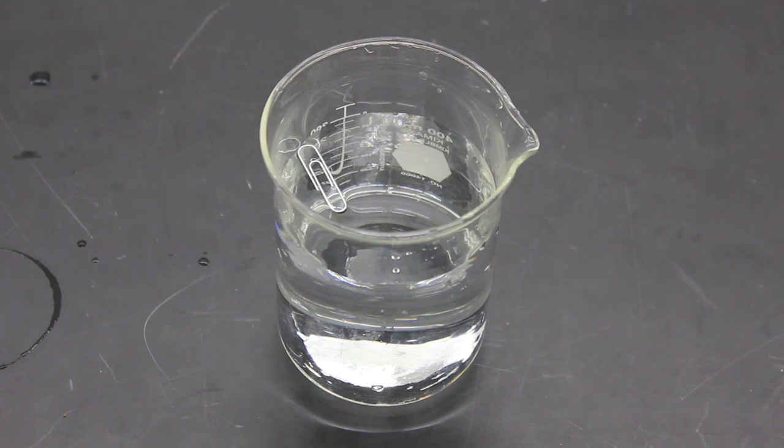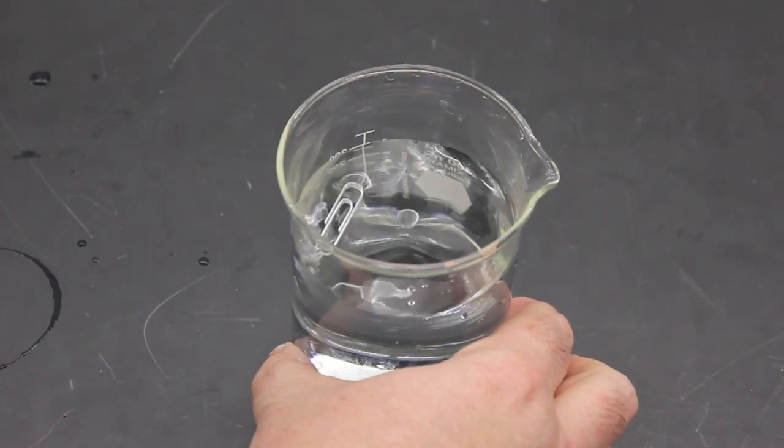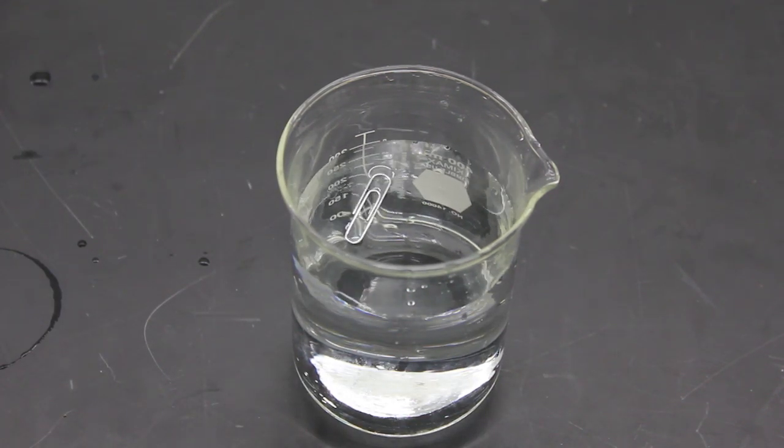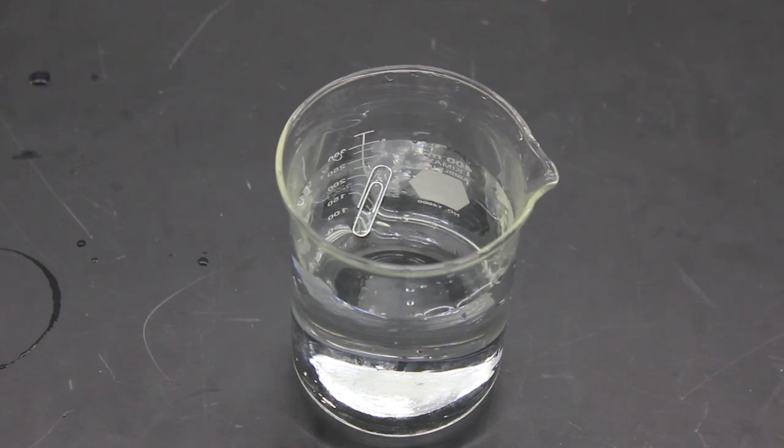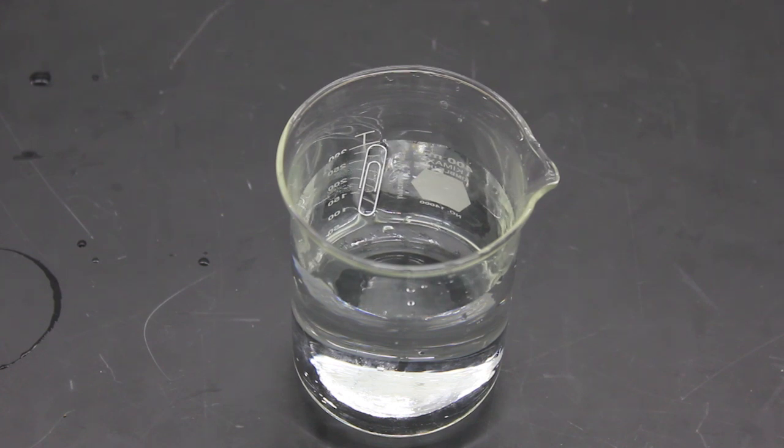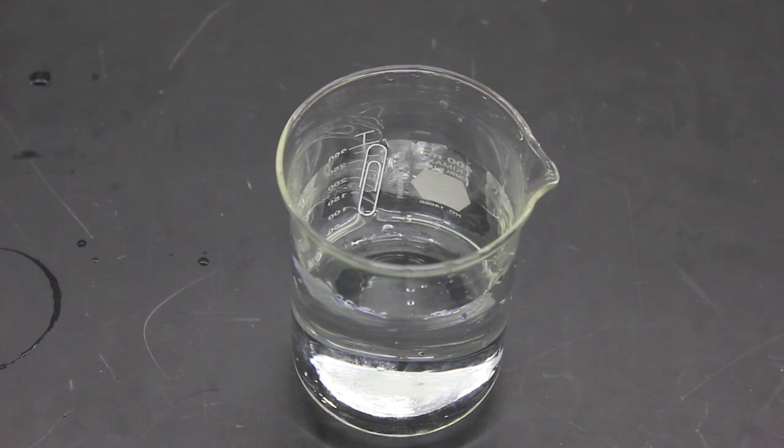To see the action of surface tension, what we've got here is a beaker of water that has a paperclip floating on the top. And if I move the beaker slightly, you can see that the paperclip floats around with the water. Now, Archimedes' principle tells us that this shouldn't happen. A paperclip is made of steel that's a lot denser than water, and so it should sink. But the paperclip is light enough that it hasn't broken the surface tension of the water, and it's this surface tension that is lifting the paperclip up.